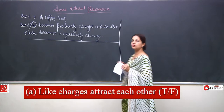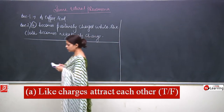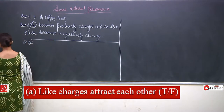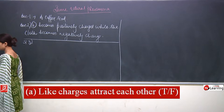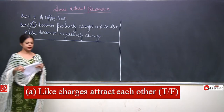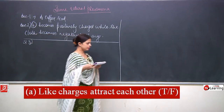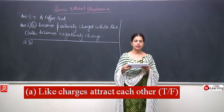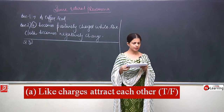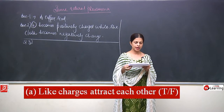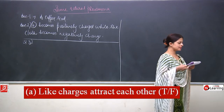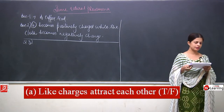Now we move to question number 3, which is a true and false exercise. We are to write T against true statements and F against false statements. Statement A is: like charges attract each other.